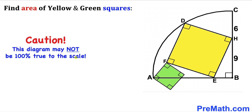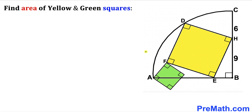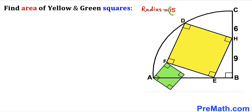Please keep in mind that this figure may not be 100% true to scale. The radius of this quarter circle is going to be 6 plus 9, which gives us 15 units. So keep in mind that the radius of this quarter circle is 15.